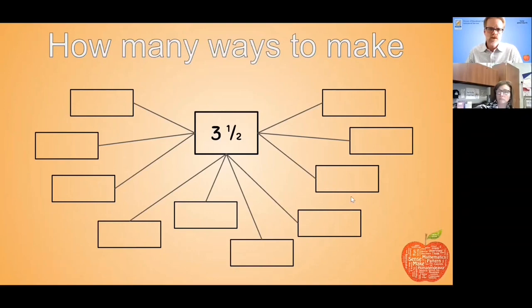If you can think of more than one way, go for it. So we see seven over two, seven halves, seven times five tenths, two plus one and five tenths, three plus one half, four minus one half.